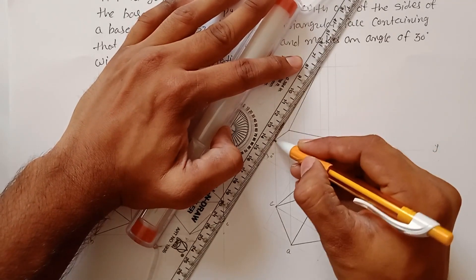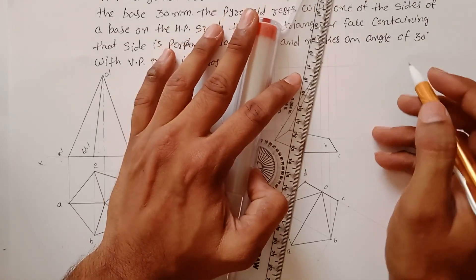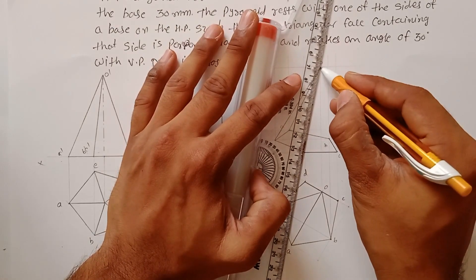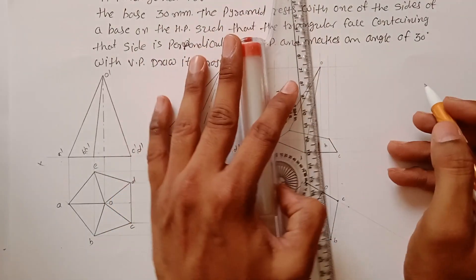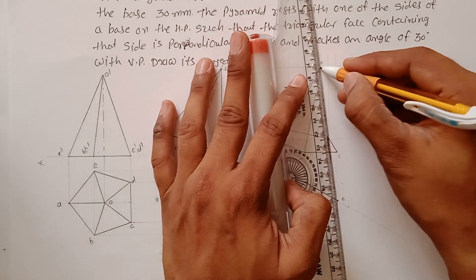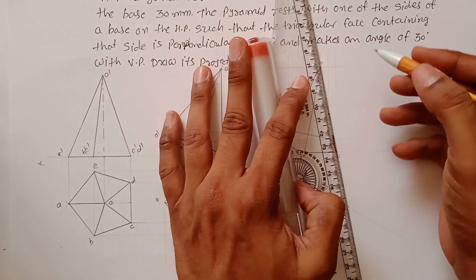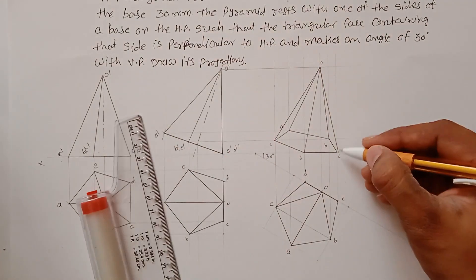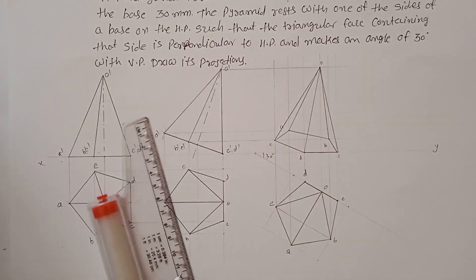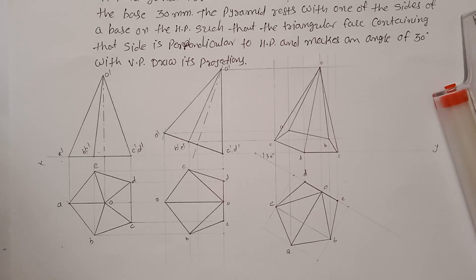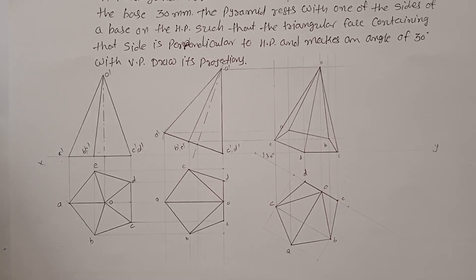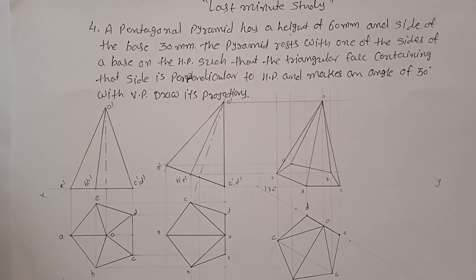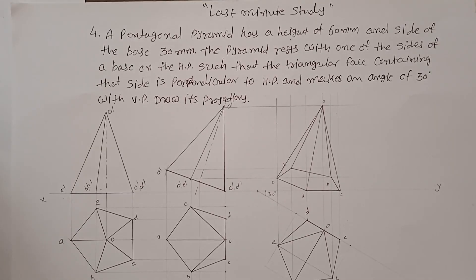Three hidden lines will be there, so just find out those lines. This is the final position of the pentagonal pyramid. This is problem number four from engineering projection of solids.